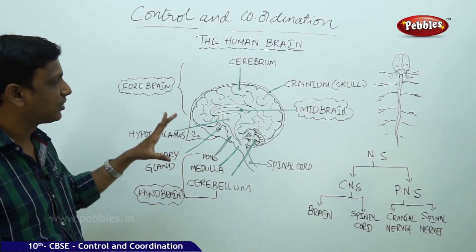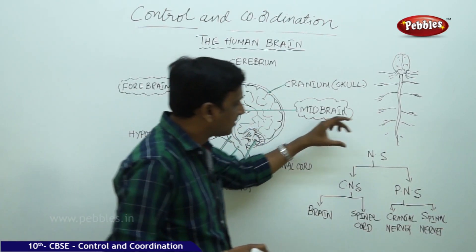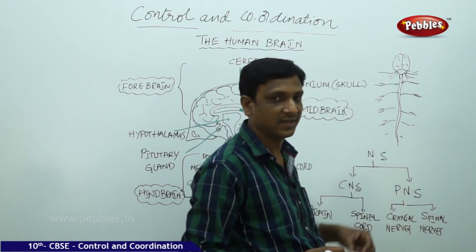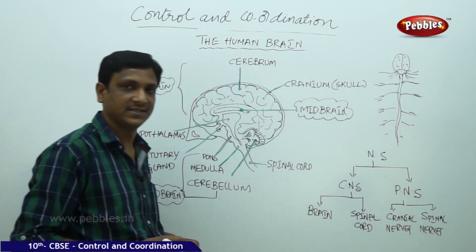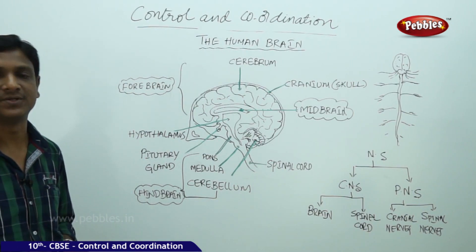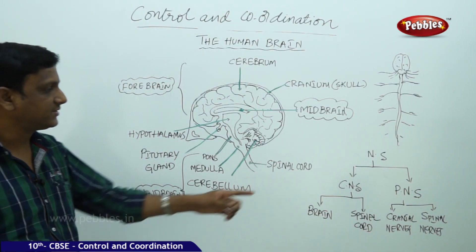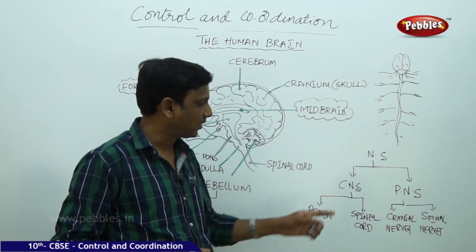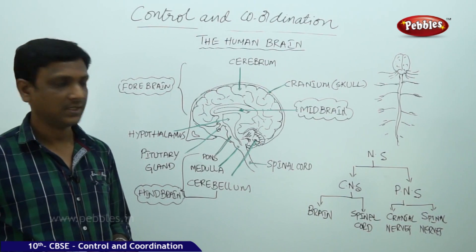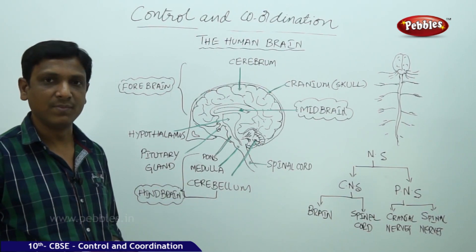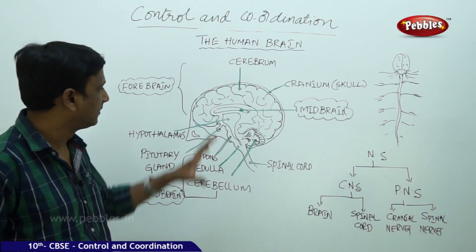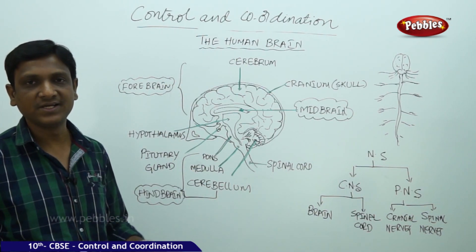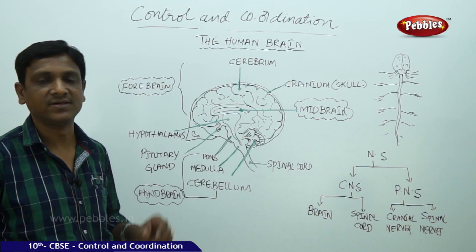The nervous system in human beings is basically categorized into two parts: CNS and PNS. CNS stands for Central Nervous System, and PNS stands for Peripheral Nervous System. The Central Nervous System is made up of two organs: the brain and the spinal cord. Brain and spinal cord together comprise the Central Nervous System.